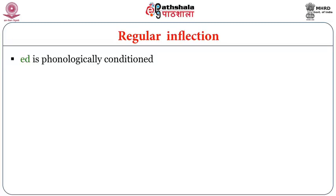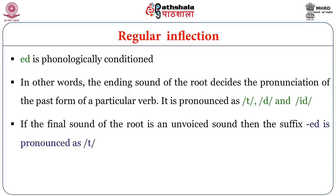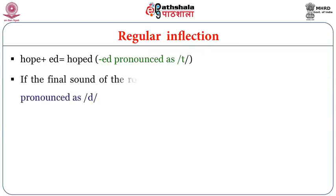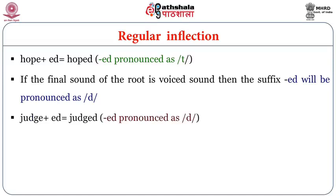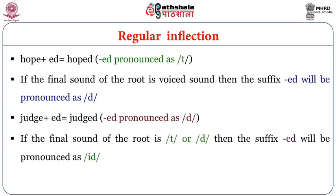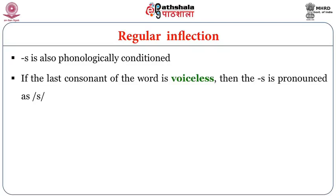The suffix ED is phonologically conditioned — the ending sound of the root decides the pronunciation of the past form. If the final sound of the root is unvoiced, ED is pronounced as T, like 'hoped'. If the final sound is voiced, ED is pronounced as D, like 'judged'. If the final sound is T or D, ED is pronounced as ID, like 'handed'. Similarly, S is also phonologically conditioned: if the last consonant is voiceless, S is pronounced as S, like 'cups' or 'cliffs'.